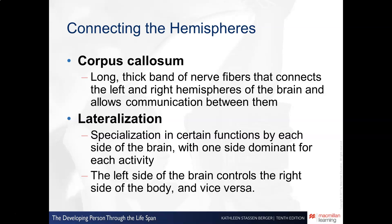Now we'll look at a couple of basic brain structures. One important term is the corpus callosum — that's basically the band of nerve fibers that connects our left and right hemispheres of the brain and allows them to communicate with each other.